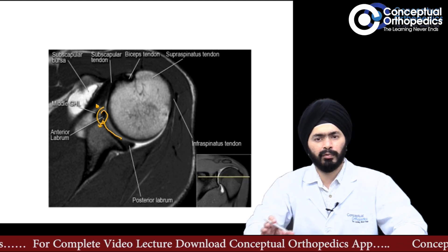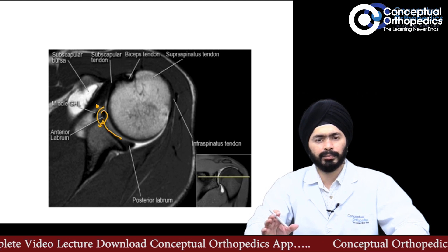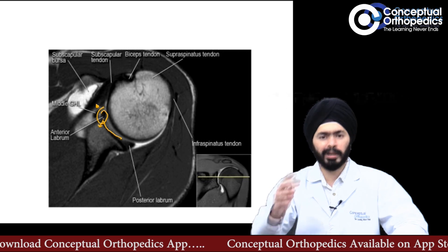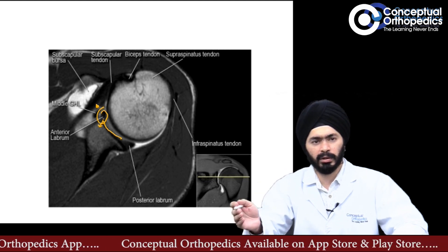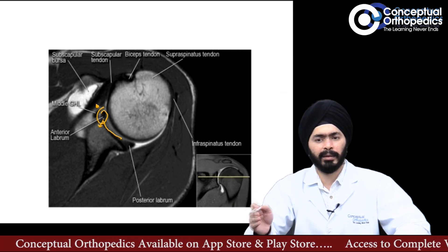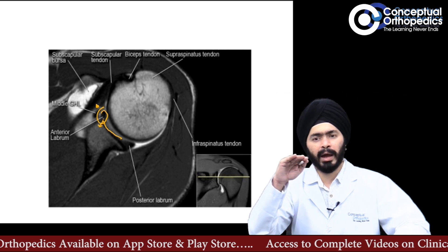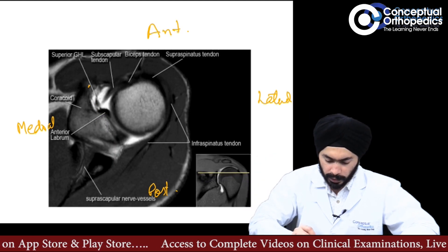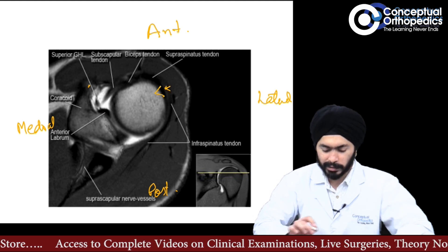Another important thing to look for in axial sections is the Hill-Sachs lesion. The Hill-Sachs lesion is always found superiorly — you have to look at the posterolateral aspect of the humeral head in the superior sections. At or above the level of the coracoid, if you see a dip in the posterolateral humeral head, that is your Hill-Sachs lesion.